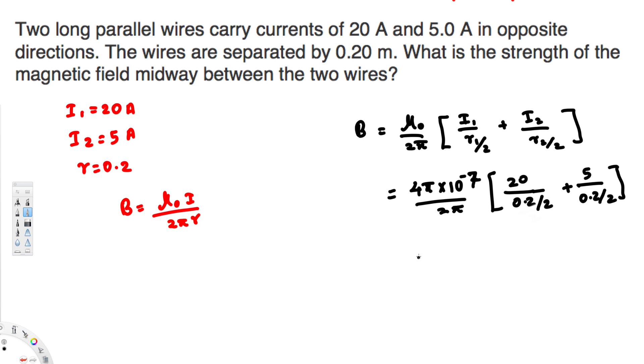If you simplify this, here we have 2π and 4π, we can cancel each other, so this is going to become just 2 right here, and this is going to become 2 × 10⁻⁷. And here, 20 divided by 0.2, that's going to become 100, and this 2 flips around, that's going to make this one 200. And here, 5 divided by 0.2, that's going to be 25, and this 2 flips around and multiplies by 2, that's going to become 50. So we multiply by 250.